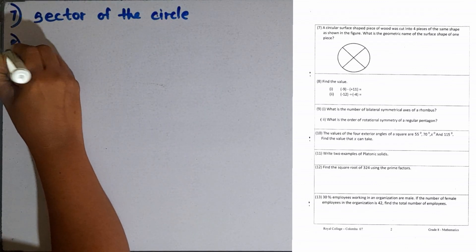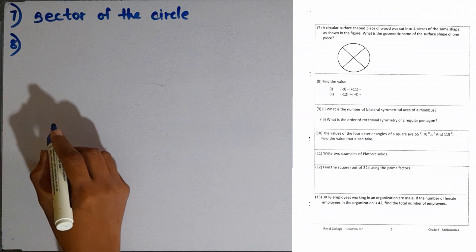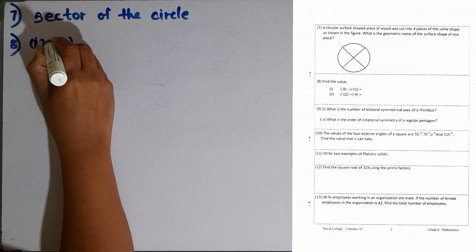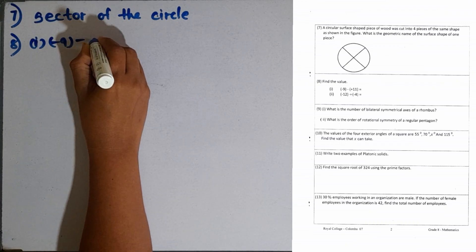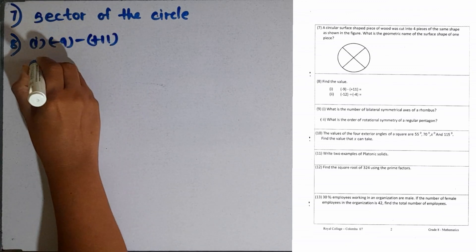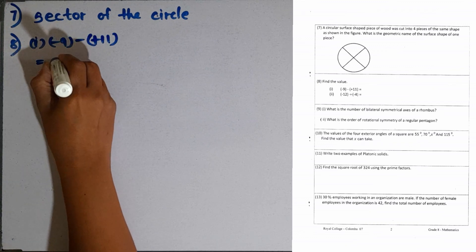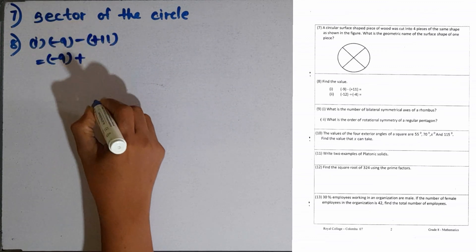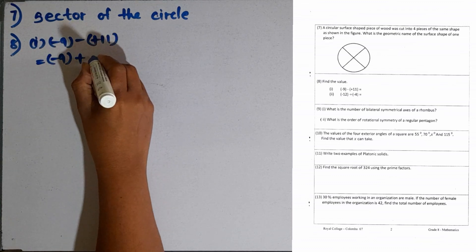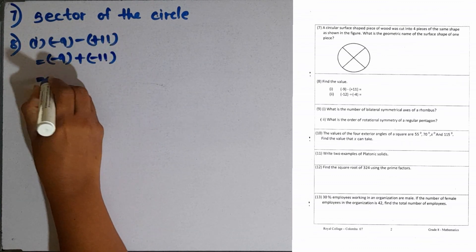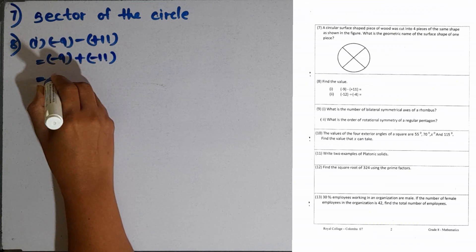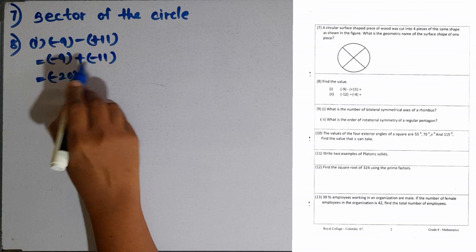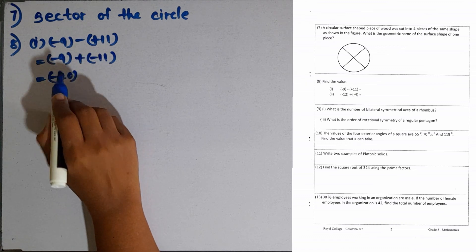Question number 8. Find the value. First one: minus 9 minus plus 11. We can convert this subtraction into addition by taking the additive inverse of the second directed number, that is minus 11. So we can add the two directed numbers. The answer is minus 20. The addition of two negative numbers becomes a negative number.